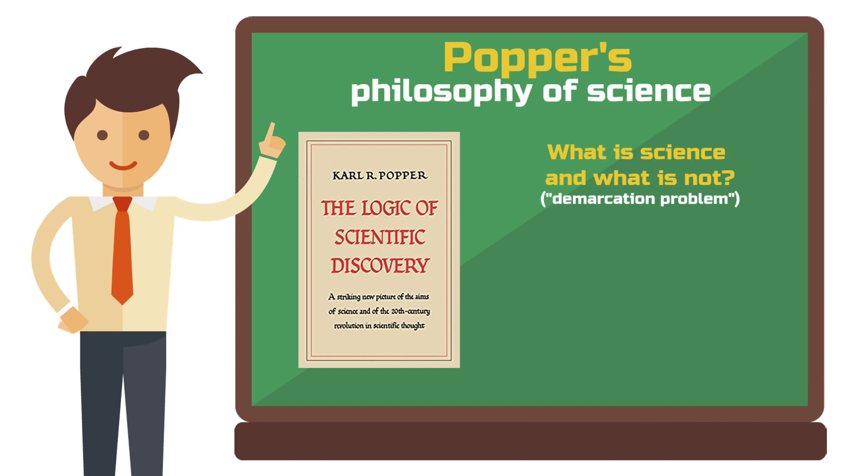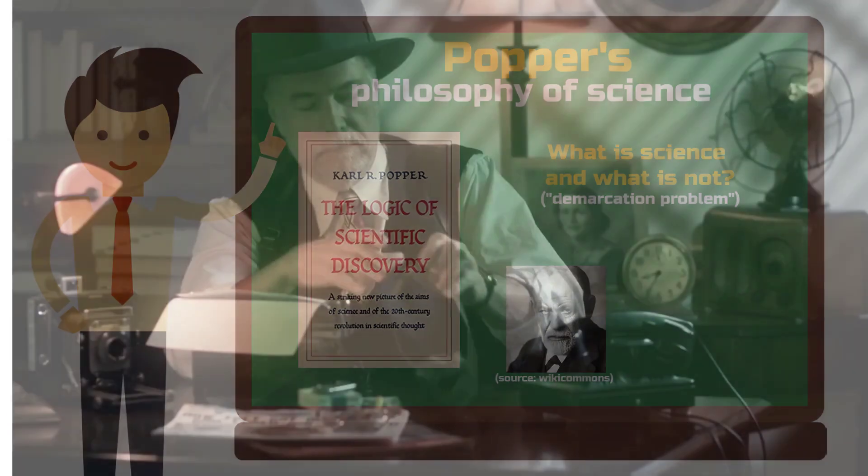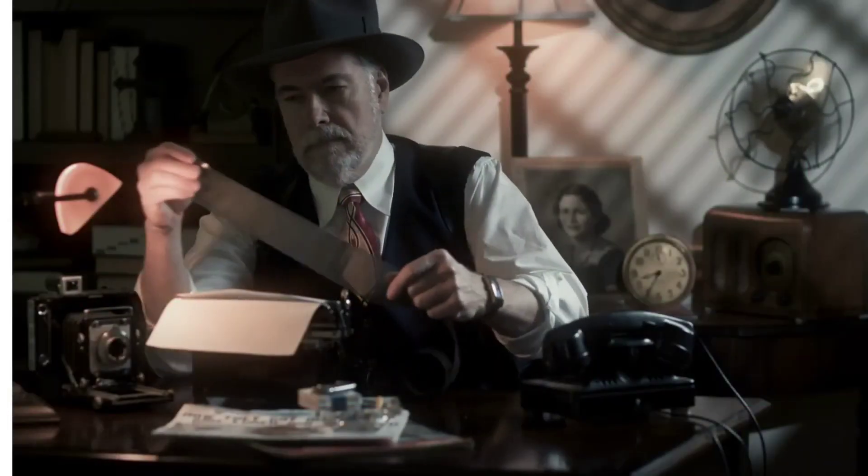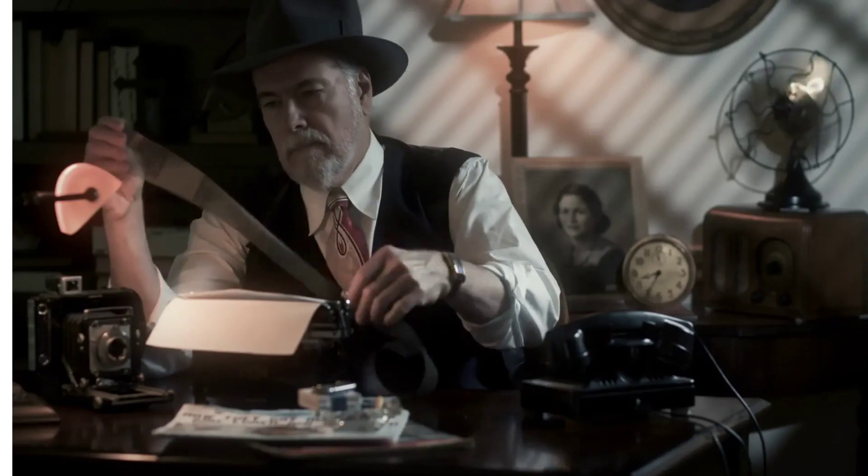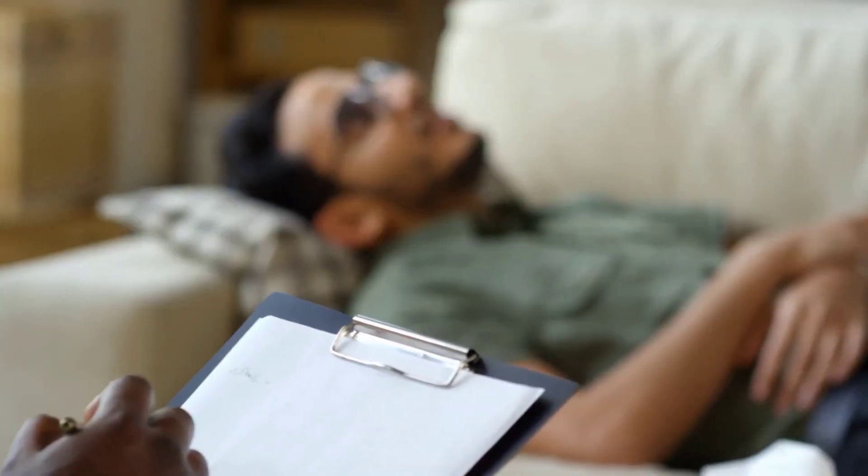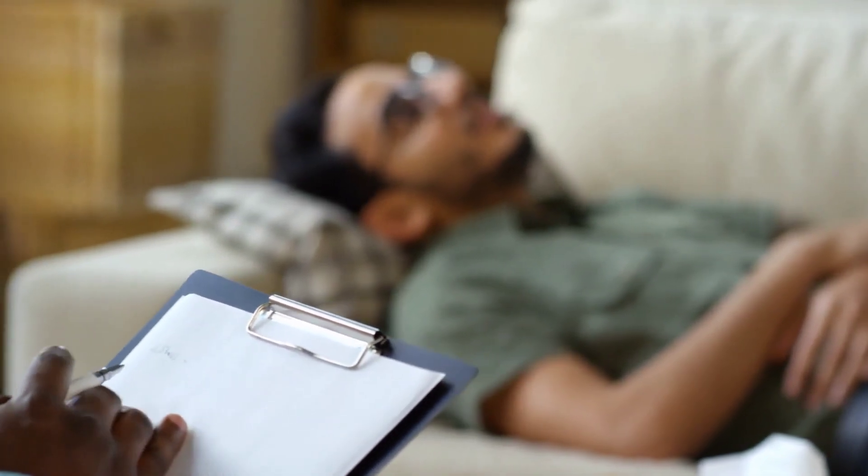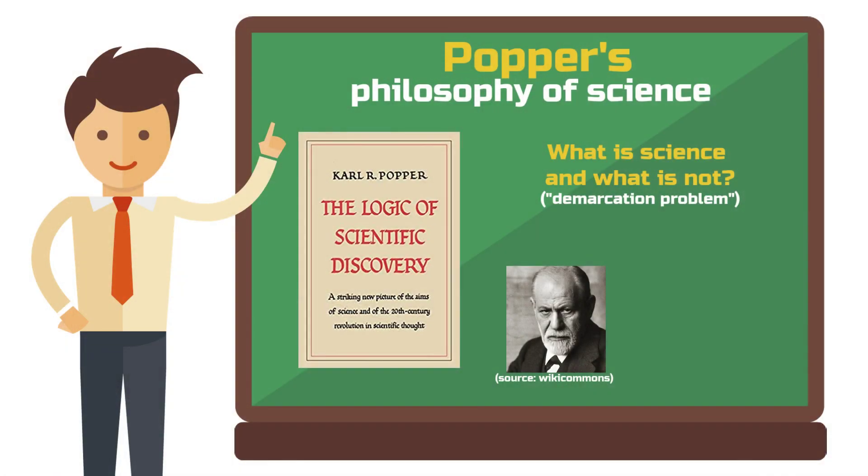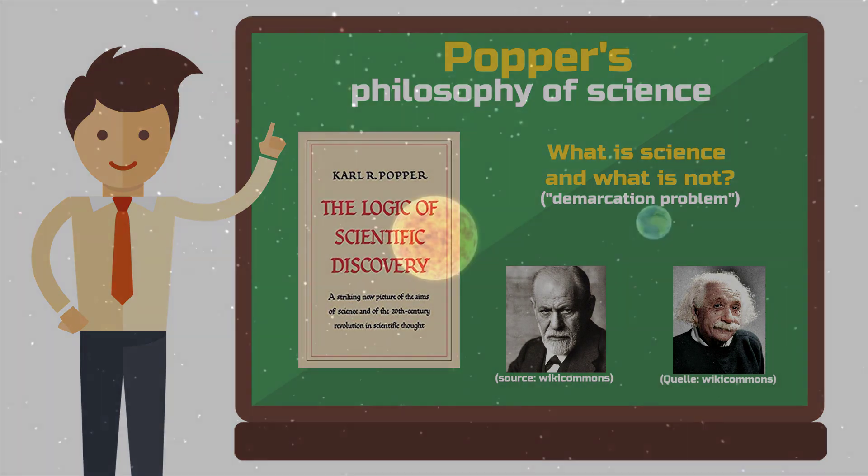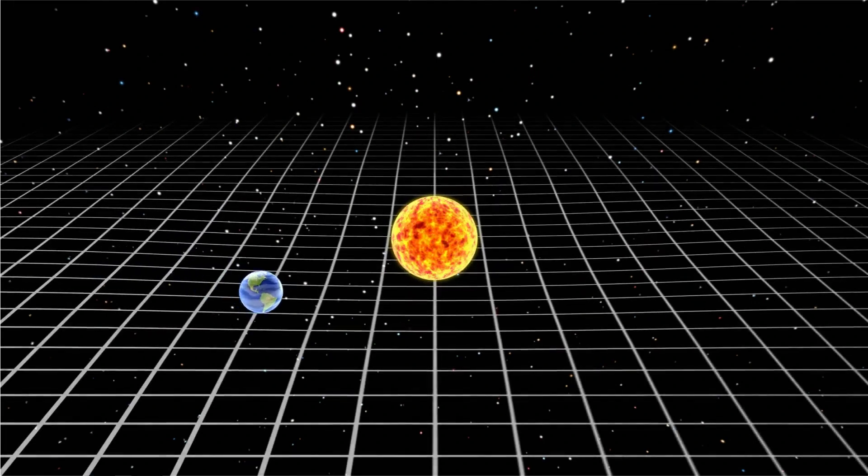At that time, Popper criticized in particular the backward-looking character of many studies. For example, Popper's contemporary Sigmund Freud looked back in time to explain the present. What Popper disliked was the fact that Freud could always search for evidence that confirmed his theory instead of looking for evidence that refuted it. Albert Einstein, on the other hand, tried to make predictions about the future using theory, which Popper preferred.